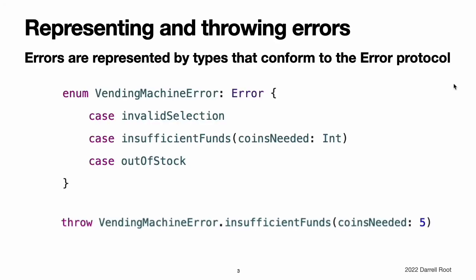Representing and Throwing Errors. In Swift, errors are represented by values of types that conform to the error protocol. This empty protocol indicates that a type can be used for error handling. Swift enumerations are particularly well suited for modeling a group of related error conditions with associated values, allowing for additional information about the value of an error to be communicated.